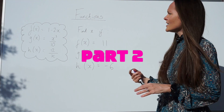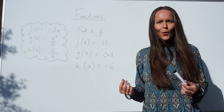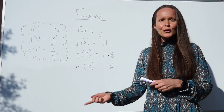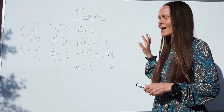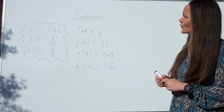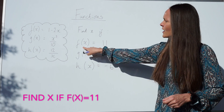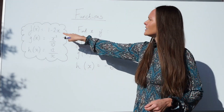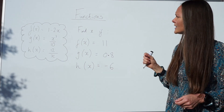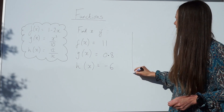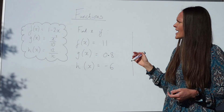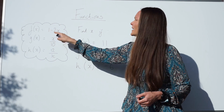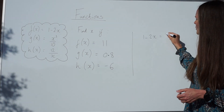Here's the next type of function question — the type where you're expected to solve an equation. If you're not very confident at solving equations, it's a good idea to go and practice your algebra, and then functions will be a lot easier. For the first one, it says find x if f of x is equal to 11. So f of x, which is the same function as earlier — 1 minus 2x — is now equal to the number 11.